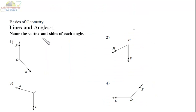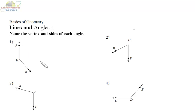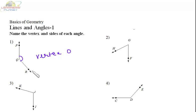In the very first question we have to name the vertex and sides of the angles. Here we see angle POR. OR is a ray and OP is also a ray and they are meeting at the point O. So what will be the name of the vertex? That is O. Vertex is O and the sides are OP and OR — OP is a ray, OR is also a ray, and they are meeting at point O.